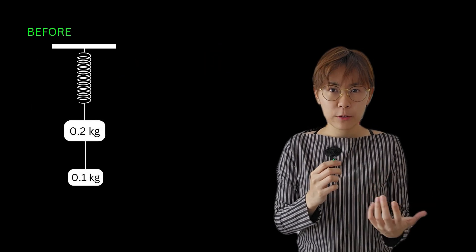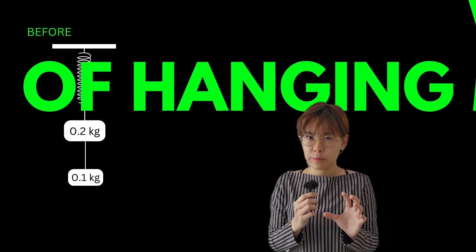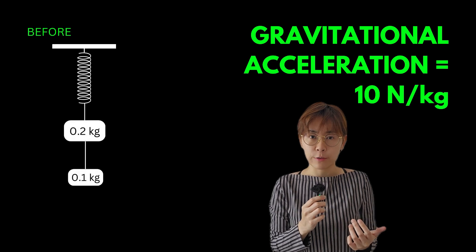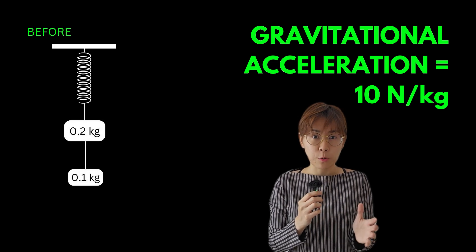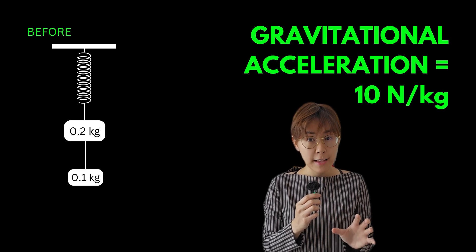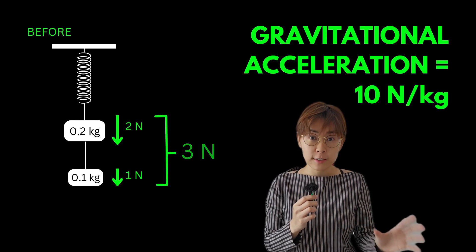First, let's think about the forces at play before cutting the thread. The downward forces come from the weights of the hanging masses. We're going to use gravitational acceleration as 10 newtons per kilogram to make things simple. This means the weights of the masses are 2 newtons and 1 newton. The total downward force is the sum of these weights, so 3 newtons.